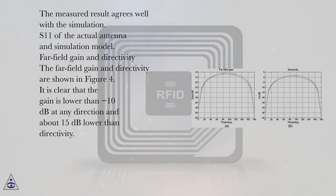S11 of the actual antenna and simulation model. Far-field gain and directivity. The far-field gain and directivity are shown in Figure 4. It is clear that the gain is lower than minus 10 decibels at any direction and about 15 decibels lower than directivity.